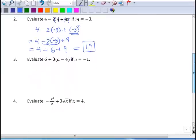Okay, number 3. Evaluate 6 plus 3 times the quantity a minus 4, if a is negative 1. So copying down my expression, 6 plus 3, the quantity a minus 4. a is negative 1, so that's going to be negative 1 minus 4.